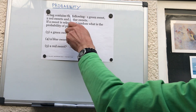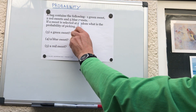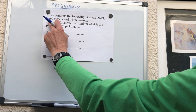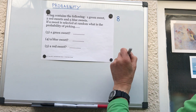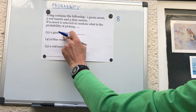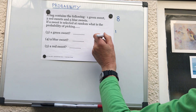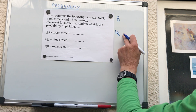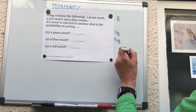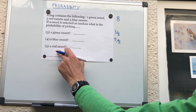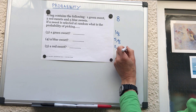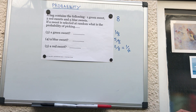Next question: a bag contains one green sweet, two red sweets, and five blue sweets. The total number of sweets is one plus two plus five, which is eight. The probability of picking a green sweet is one eighth. The probability of picking a blue sweet is five eighths. The probability of picking a red sweet is two eighths, which simplifies to one quarter.